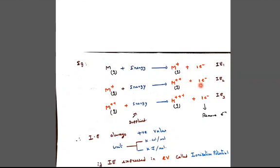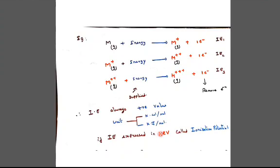To become 2+ by losing one electron is the second ionization. From 2+, the energy required to remove one more electron to become 3+ is the third ionization energy. Ionization energy is always a positive value. The unit may be kilocalorie per mole or kilojoule per mole. If ionization energy is expressed in electron volts instead of kilojoule or kilocalorie, it is called ionization potential.